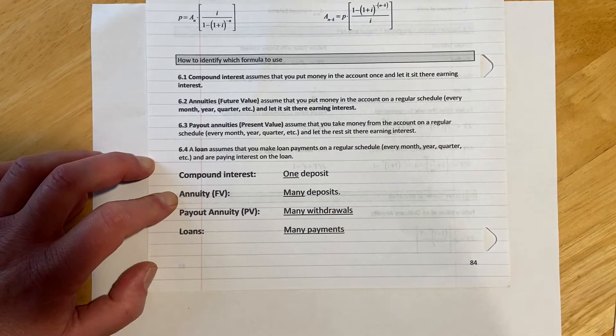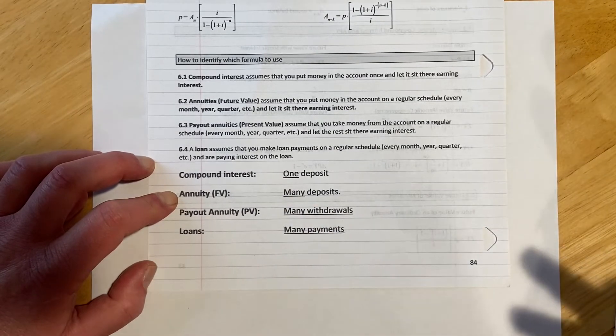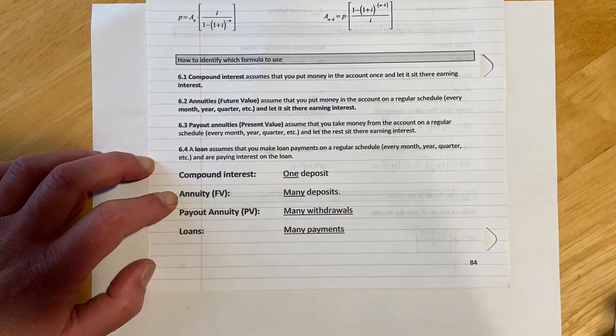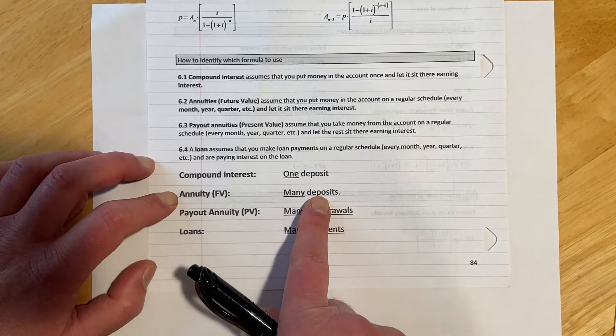In 6-2, we had future value annuities. For that we're going to make deposits over time so that we have some money later, so that would be like saving for your kid's college.